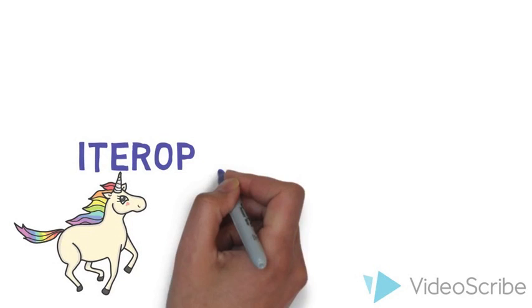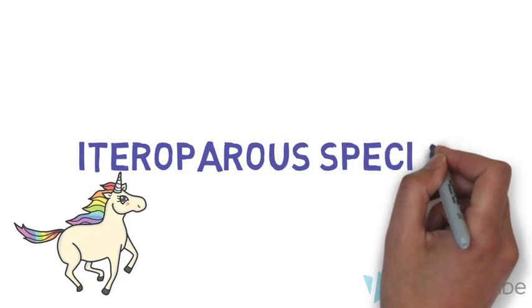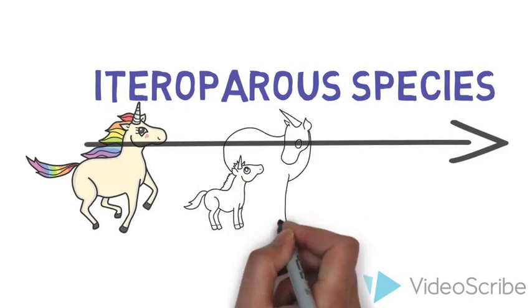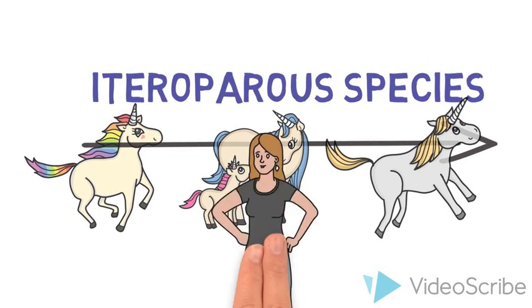However, there is another type of species, called iteroparous species, that reproduce more than once in their life and continue to live after reproduction, like humans for example.